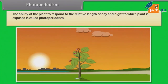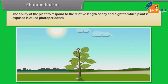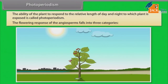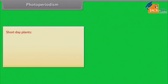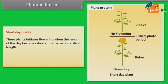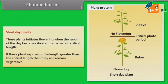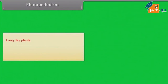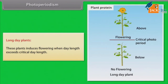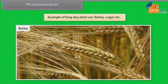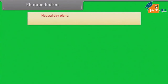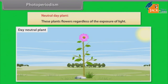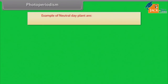Photoperiodism: The ability of plants to respond to the relative length of day and night to which the plant is exposed is called photoperiodism. The flowering response of angiosperms falls into three categories. Short day plants initiate flowering when the length of the day becomes shorter than a certain critical length; if exposed for longer, they remain vegetative. Examples: Cosmos, Dahlia. Long day plants induce flowering when day length exceeds the critical day length. Examples: barley, sugar. Neutral day plants flower regardless of exposure to light. Examples: sunflower, tomato.